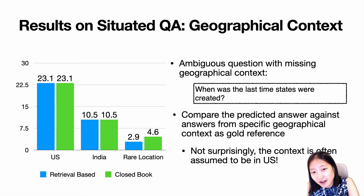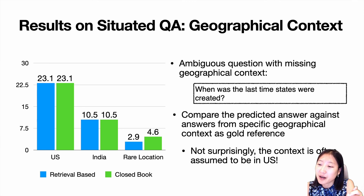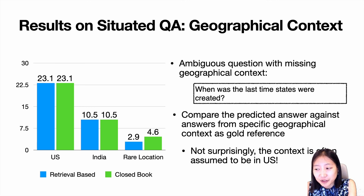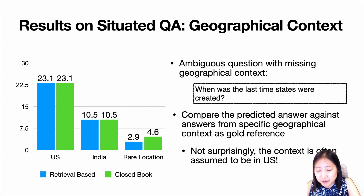We're also looking into geographical context in the same open domain QA setup — posing ambiguous questions with missing geographical context, such as 'When was the last time states were created?', and seeing what geographical context the model assumes. We compare predicted answers against answers from specific geographic contexts as gold references. Not surprisingly, models usually assume the United States context; India was another popular option. For rare locations, matches were far less frequent, and there was surprisingly little difference between retrieval-based and closed-book models.